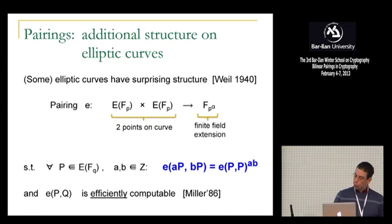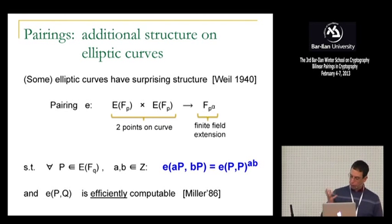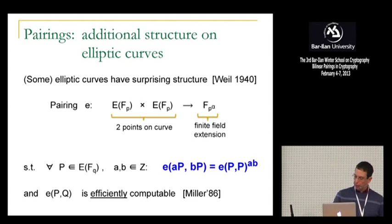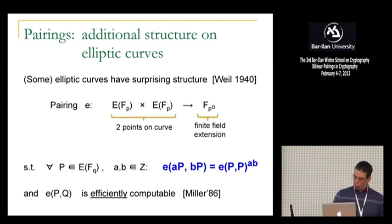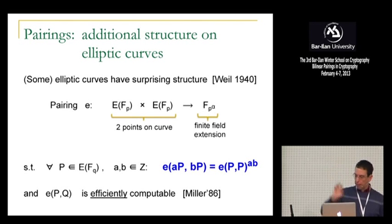The Weil pairing basically is a map that takes two points on the curve and maps them into some finite field extension over which the curve is defined. This map is bilinear. Bilinearity means that if I multiply the point P by an unknown scalar A on the left, or multiply on the right by B, then these scalars actually come out of the parentheses. So that's kind of the magic that makes bilinear crypto, pairing-based crypto, possible. Victor Miller showed that the pairing is in fact efficiently computable — it's basically kind of an exponentiation algorithm.